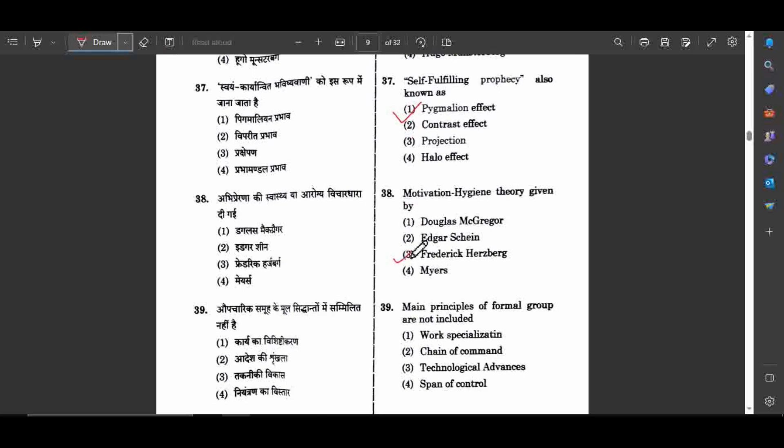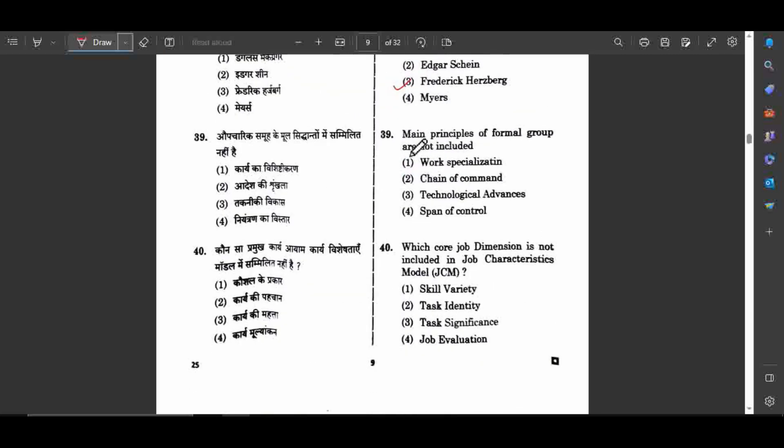Question number 39: Main principles of formal group are not included. When a formal group is formed, each person and team member is given some work, so it includes work specialization, chain of command, and span of control—who reports to whom. But technological advances may or may not happen, there's no guarantee. So the answer is 3, technological advances.